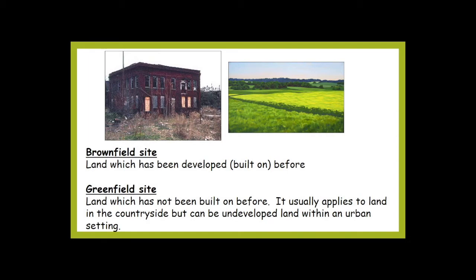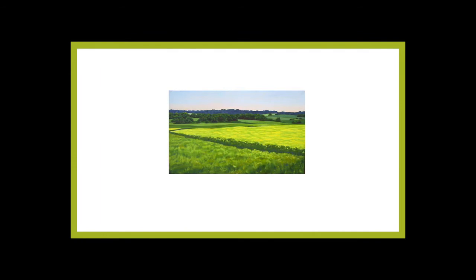In the handout accompanying this lesson there are two photographs to use as the centre of a spider diagram for each site. If you have a printer, print them out; if not, just write 'brownfield site' and 'greenfield site' in bubbles. You'll need about half a page of space for each. We're going to deal with greenfield sites first — either cut and stick the image or write 'greenfield site' in a bubble.